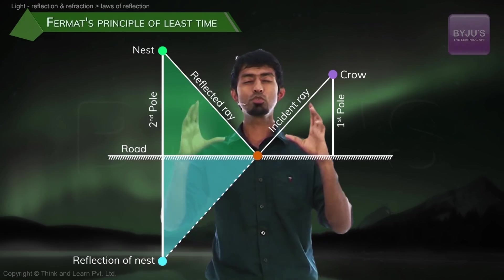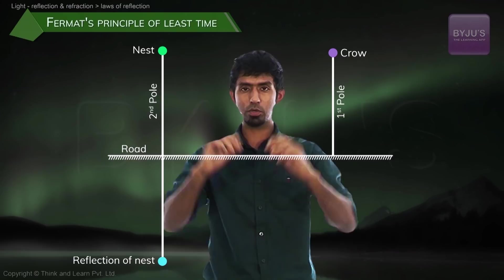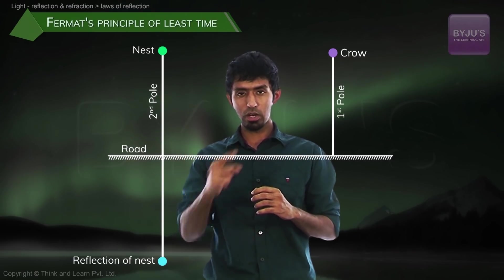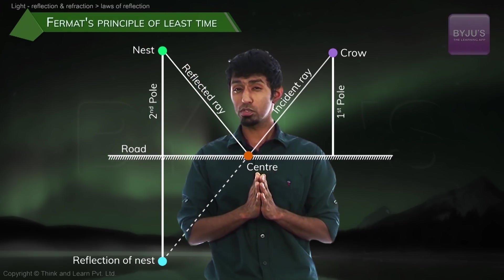Now, what if these two poles are of equal height? What happens? Watch what happens if these two poles are of equal height. You reflect it and draw a line. Where does it pass? Right through the center of that road. You deflect it back. Now, what do you see?